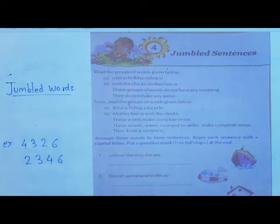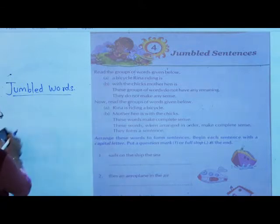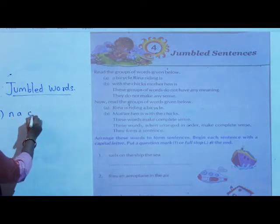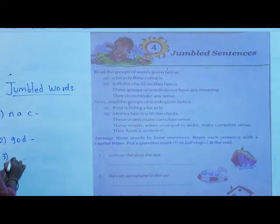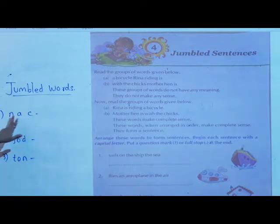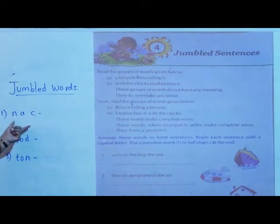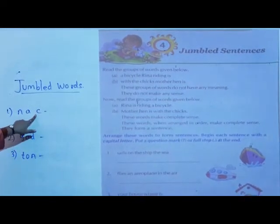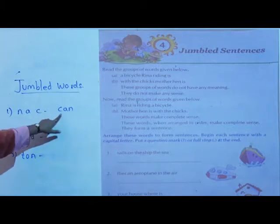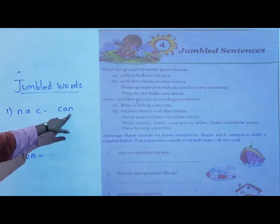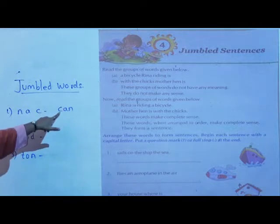Now see — the jumbled letters are: first, n, a, c. Second, g, o, d. Then t, o, n. These are not in a systematic manner. Does 'n, a, c' have any meaning? No, it doesn't. So you rearrange it: c, a, n — 'can'. That has meaning. We will use this while making a sentence.